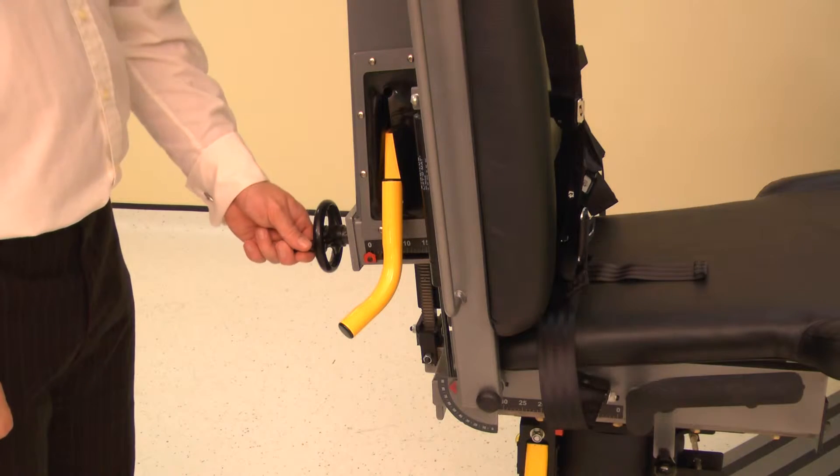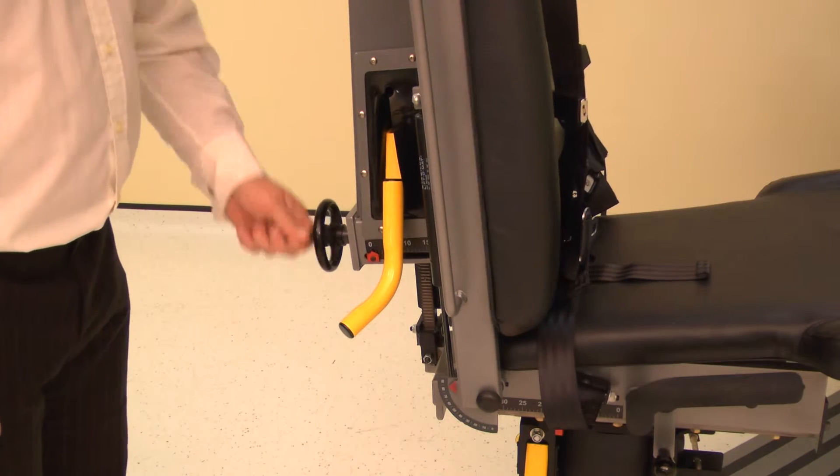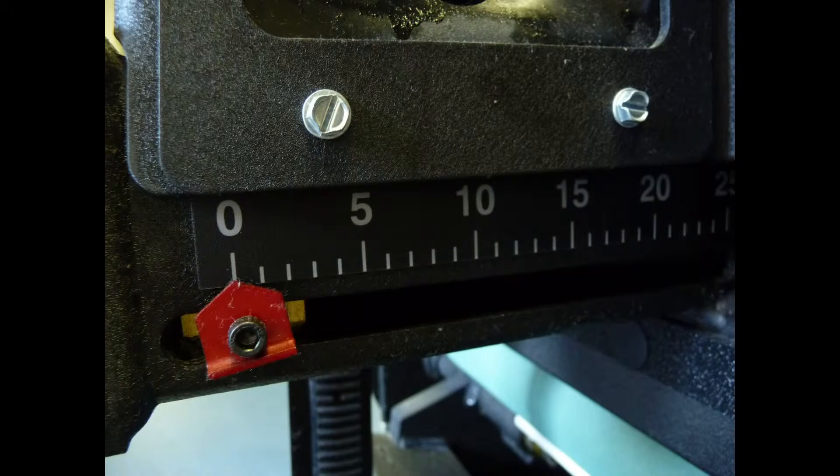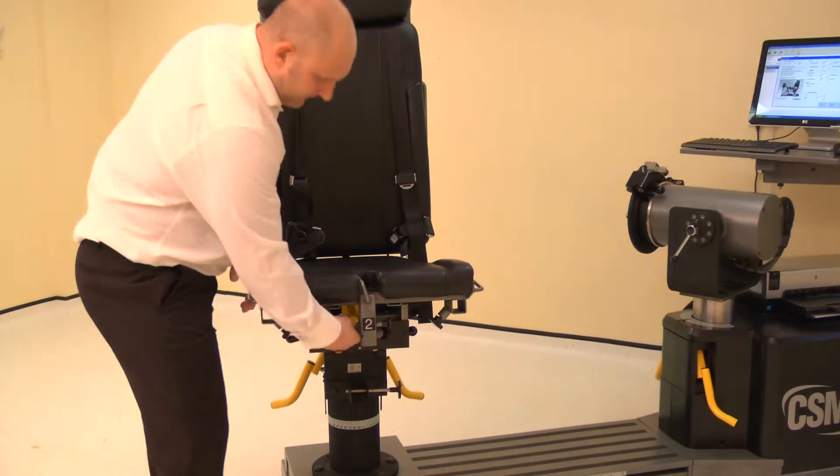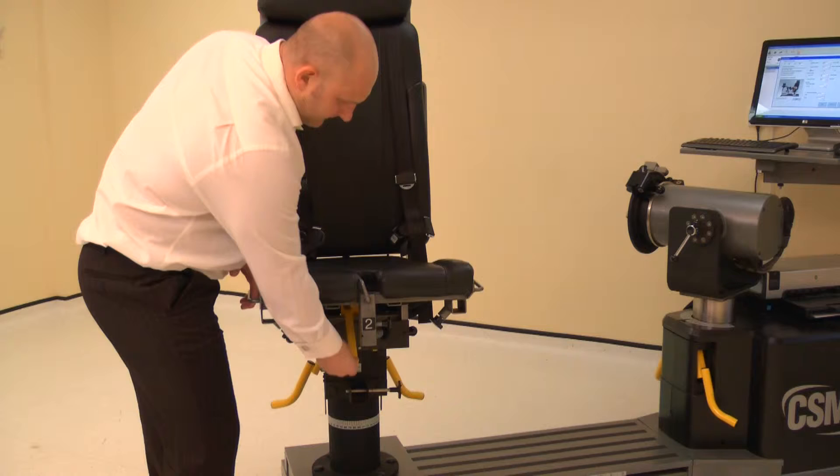Set the chair back translation by winding the handle. Adjust the chair back translation to position 0. Set the seat to the down position by lifting the seat and releasing the lock.